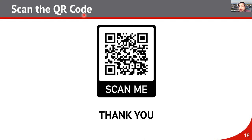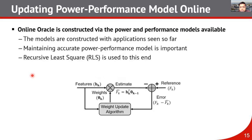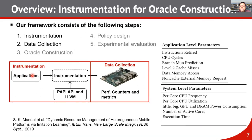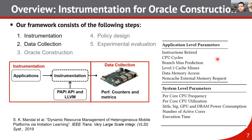Regarding the features used in runtime modeling: the application-level parameters shown in the table are the features — instructions retired, CPU cycles, branch miss prediction, level-2 cache misses, data memory access, and non-cache external memory requests. If your platform has more onboard sensors that can provide additional features, you can definitely incorporate more features into the model.